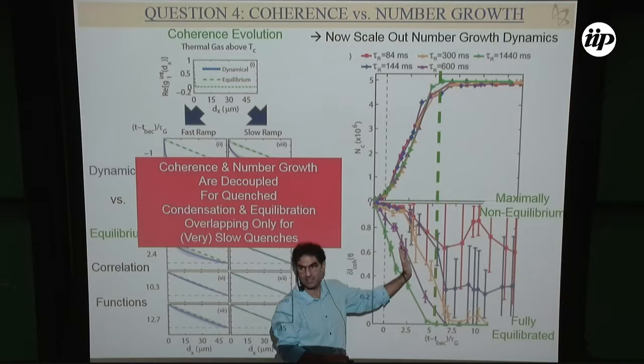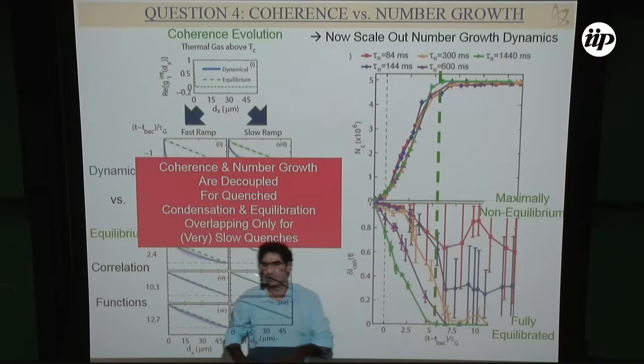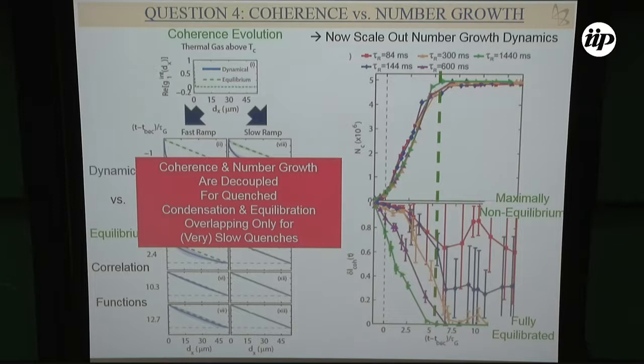On the same timescale, we see that even though condensate growth follows the same dynamics for all quench rates, for very slow quenches the system reaches full phase coherence around the same time as the density reaches maximum. But for faster quenches, the defects prevent uniform phase coherence and it takes much longer to reach equilibrium. This shows the decoupling between number growth and coherence — number growth is similar, but coherence is very different because it's growing with phase fluctuations.